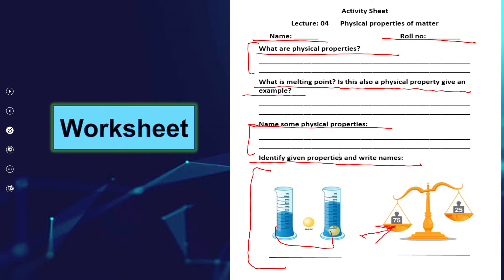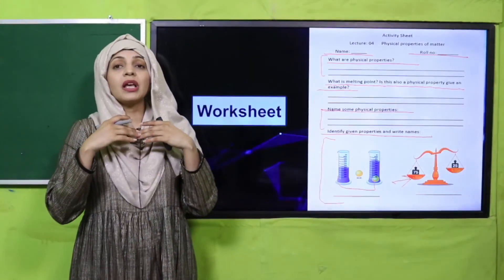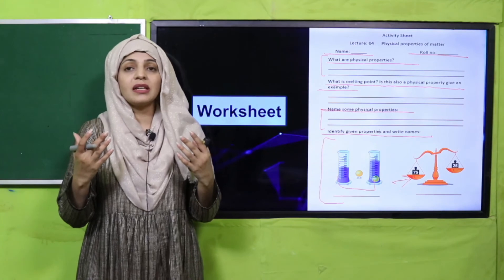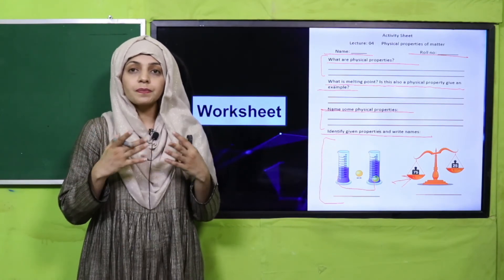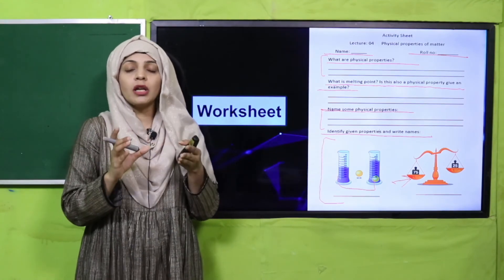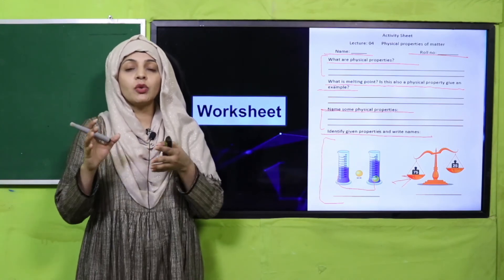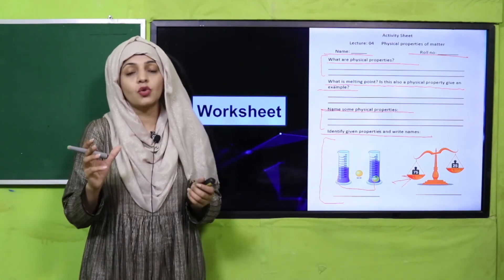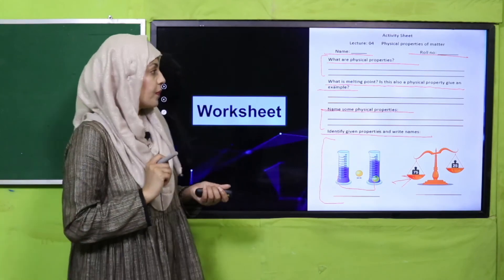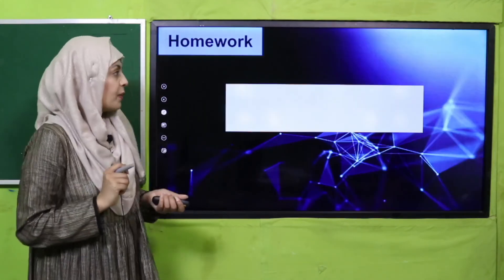As far as melting point is concerned, what is melting point and is it a physical property? We can give an example. For example, ice melts when the temperature is above zero degrees Celsius. So this is the melting point of ice. When a solid changes its state from solid to liquid at a given temperature, that is called its melting point. And yes, it is a physical property.